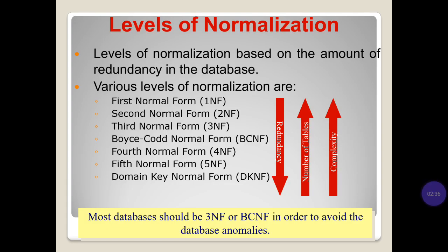Levels of normalization are based on the amount of redundancy in the database. Various levels of normalization are: 1st normal form (1NF), 2nd normal form (2NF), 3rd normal form (3NF), Boyce-Codd normal form (BCNF), 4th normal form (4NF), 5th normal form (5NF), and domain-key normal form (DKNF).